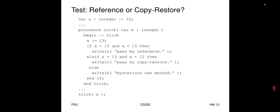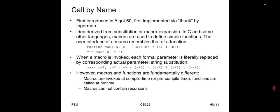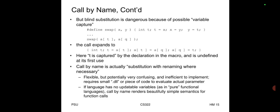Call by name: first introduced by Algol 60, implemented via 'thunks' by Ingerman. The idea is derived from substitution or macro expansion. In C and some languages, macros are used to define simple functions. When a macro is invoked, each formal parameter is literally replaced by the corresponding actual parameter string. Example: max(x+1, y-2) → x+1 > y-2 ? x+1 : y-2. However, macros and functions are fundamentally different — macros are invoked at compile/pre-compile time, functions at runtime; macros cannot contain recursion.